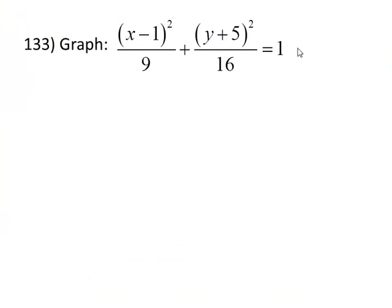Here we have an ellipse. h, k is the point 1, negative 5. The way that we know this is an ellipse, both variables are squared. It's a sum, and the two denominators are not the same. The denominator of 9 tells me that a is equal to 3 for this ellipse, and b is equal to 4 from the denominator of 16.